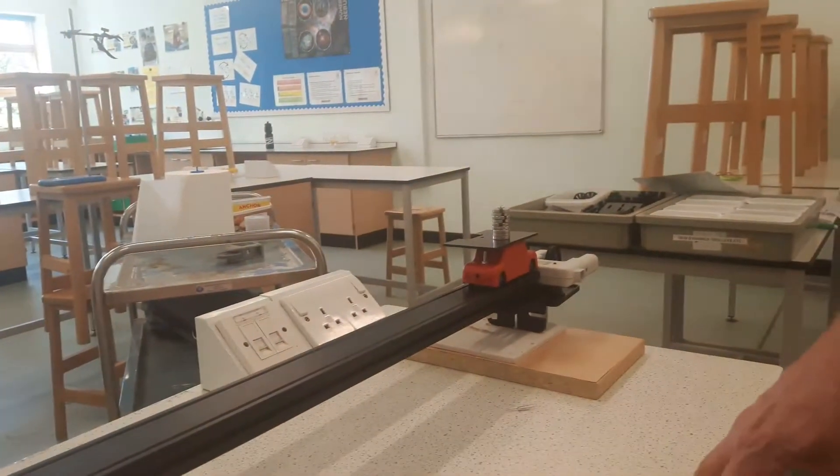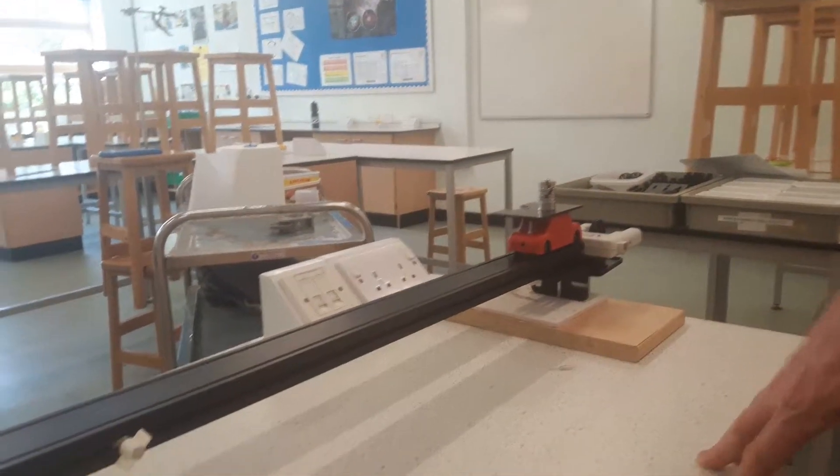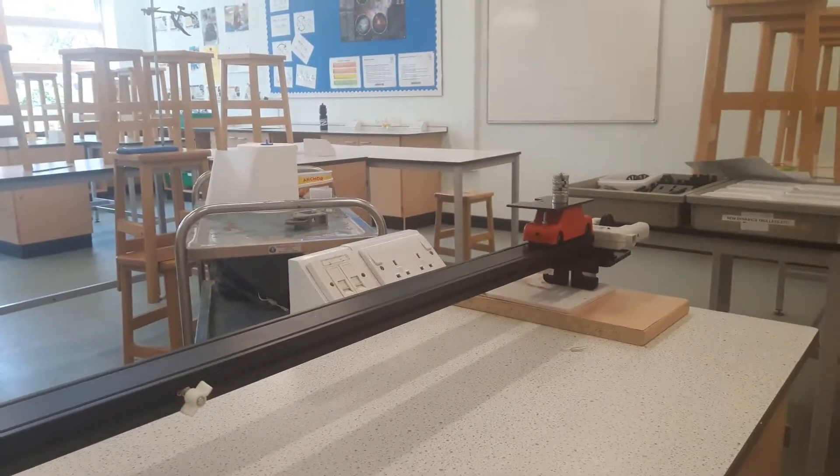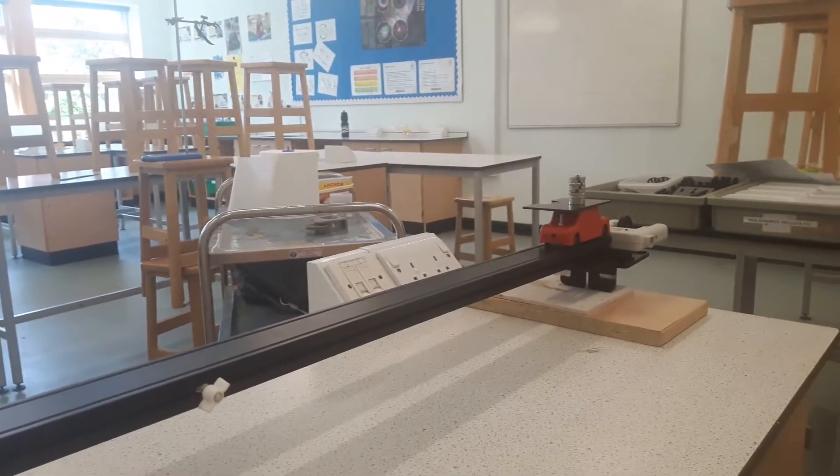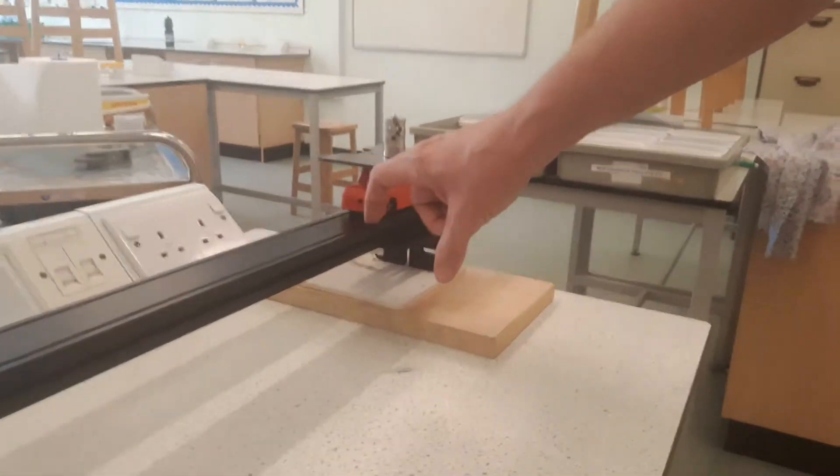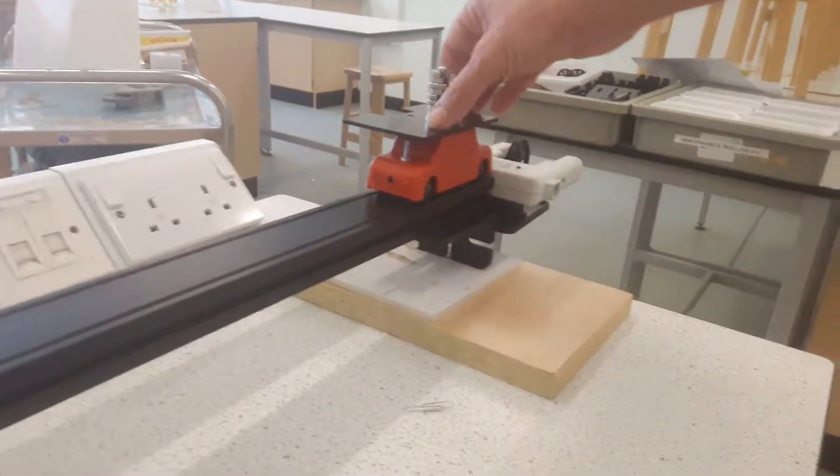Now the reason for the downward slope is because we want to try and eliminate the effect of friction in our experiment. There is friction everywhere in the bearings of the wheels on the surface of the track.